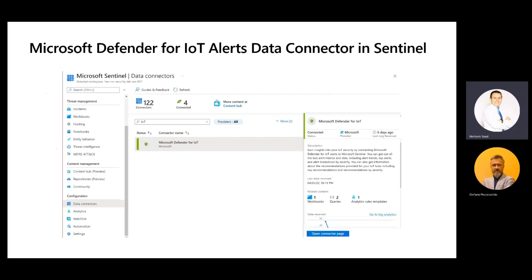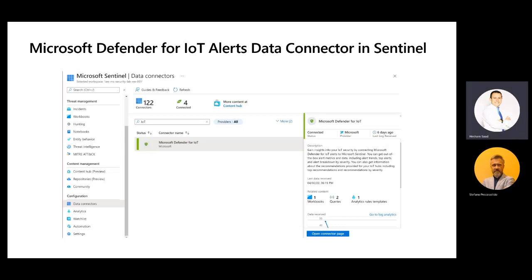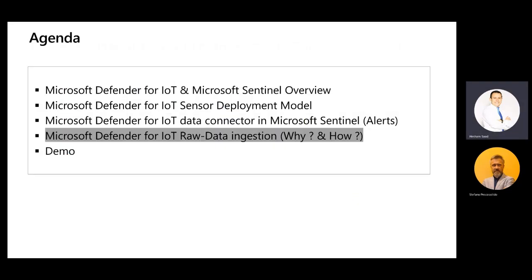The first level of integration is related to alerts. In Microsoft Sentinel's data connectors, there is a dedicated connector called Microsoft Defender for IoT. Once you complete the integration, Sentinel will automatically pull all alerts triggered by Defender for IoT and show them in your Microsoft Sentinel incidents. Beyond alerts, our colleague Stefano will show how to ingest raw data from Defender for IoT into Sentinel.